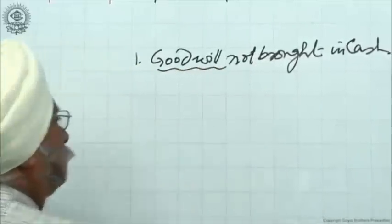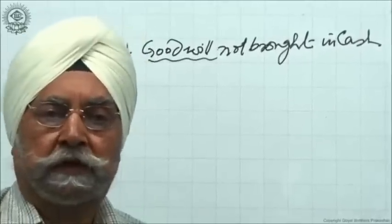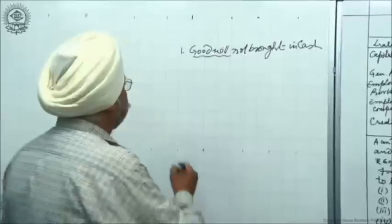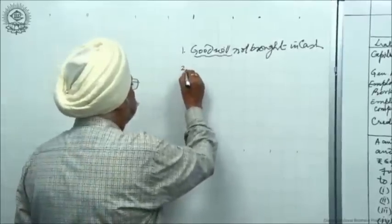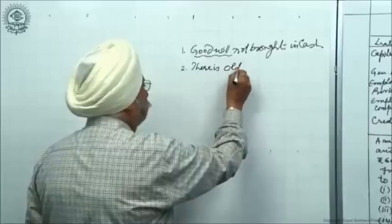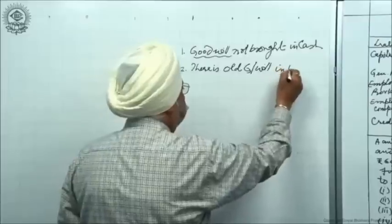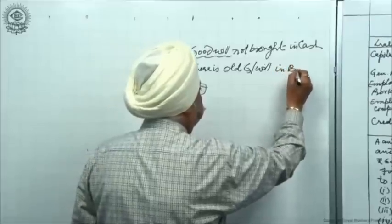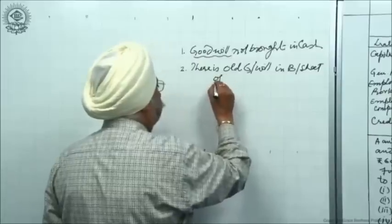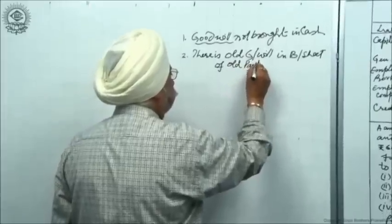The new partner does not bring anything for goodwill — how it is to be treated will be discussed today. The second condition is: there is an old goodwill account in the balance sheet of the old partners.